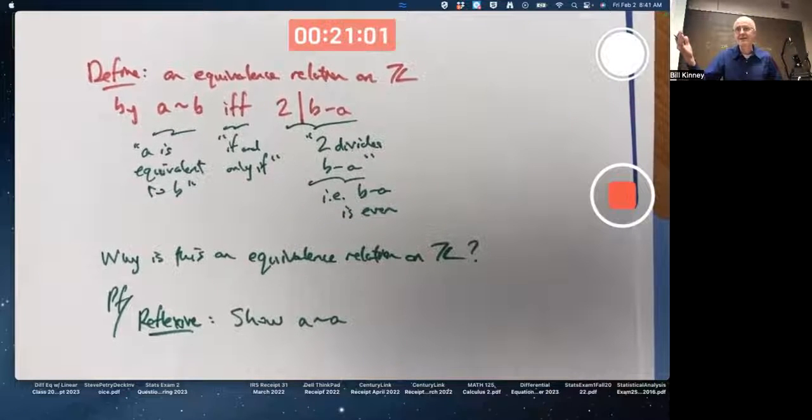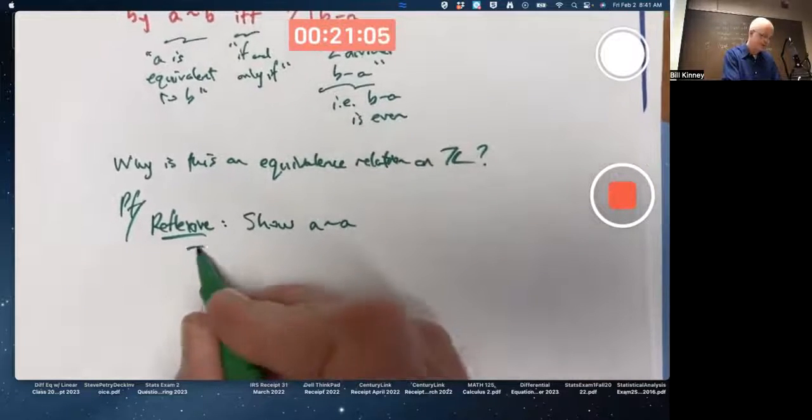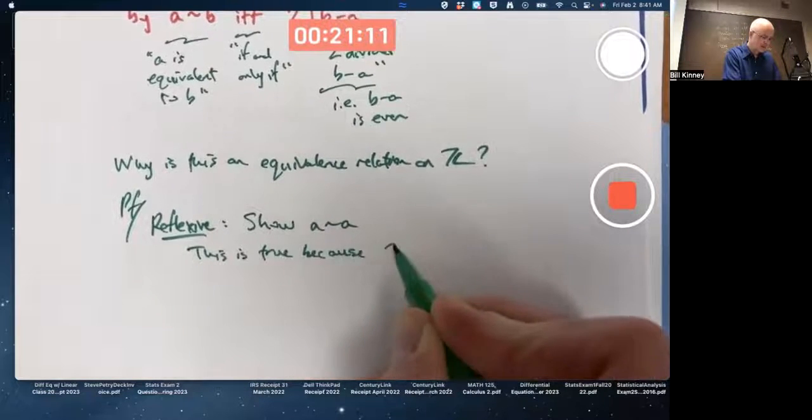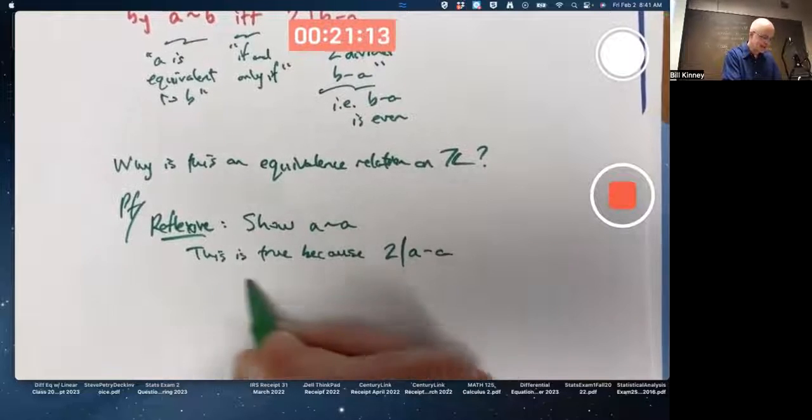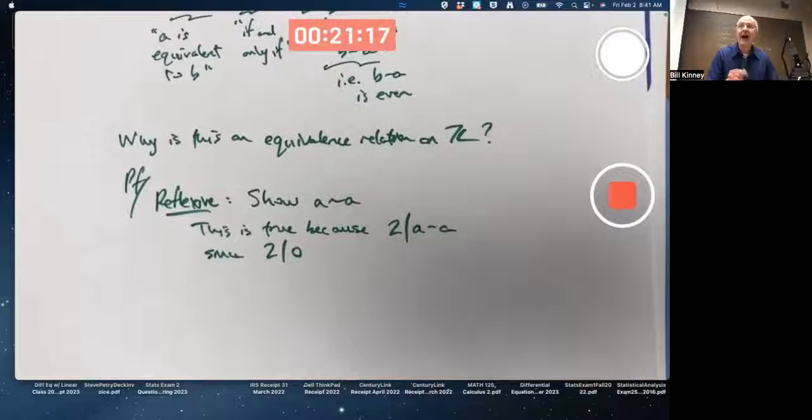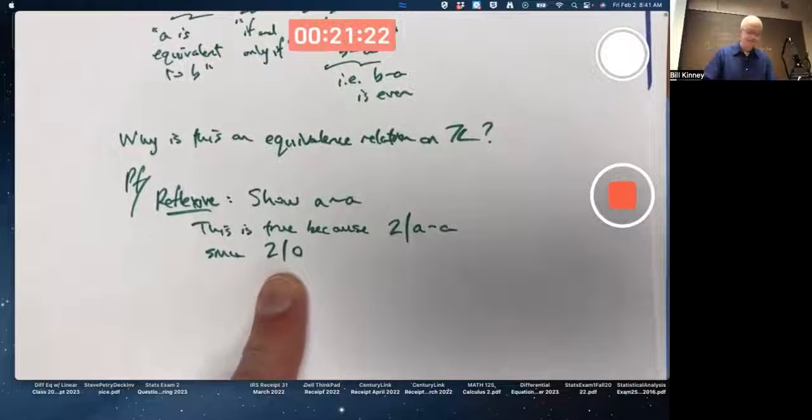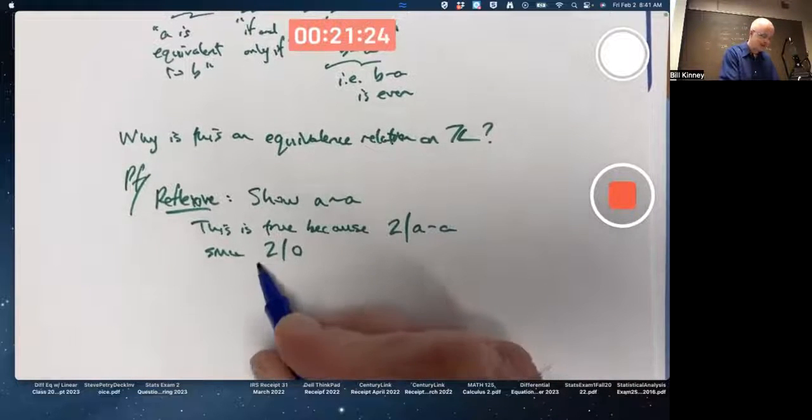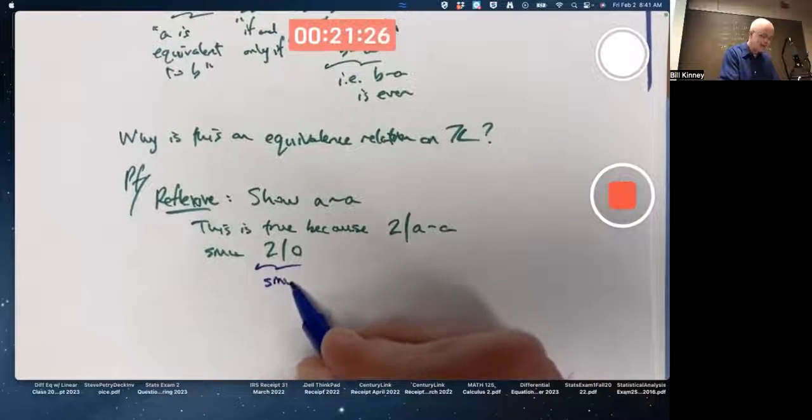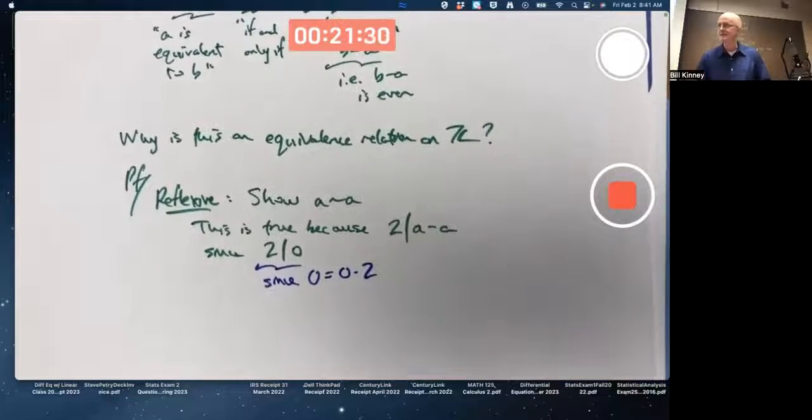Well, A minus A is zero. Yes, two divides zero. Any number divides zero. This is true because two divides A minus A since two divides zero. Any number divides zero. I'm not dividing by zero there. I'm not doing two divided by zero. I'm saying two divides zero. Why? Since zero equals zero times two, that's why.